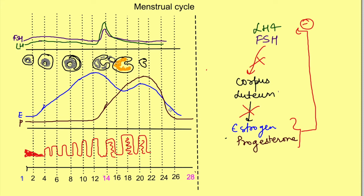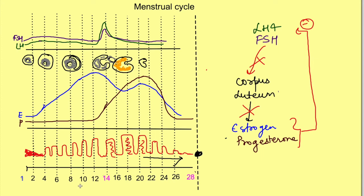As estrogen and progesterone levels decrease, the entire effect on the uterus is lost. Necrosis of the epithelium starts, blood vessels vasoconstrict due to lack of hormonal stimulus, leading to shedding of the uterine epithelium. When the necrosis is complete, this leads to menstruation. So there is extensive interlinking of the various cycles.